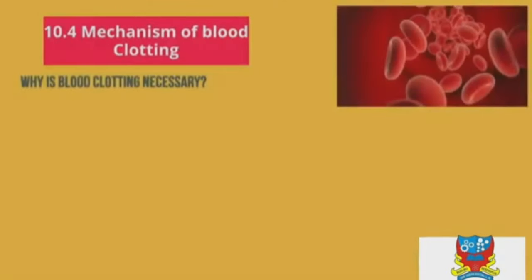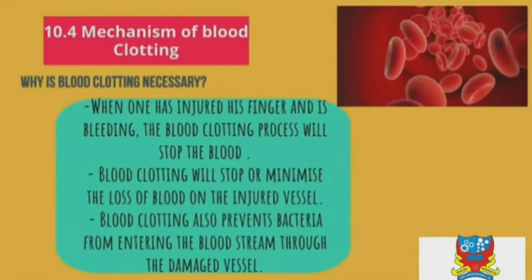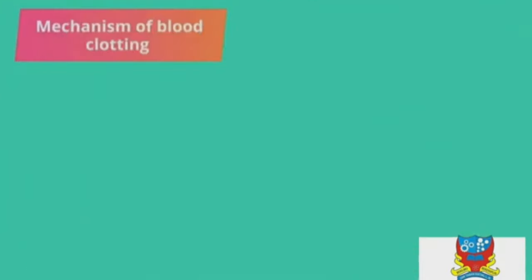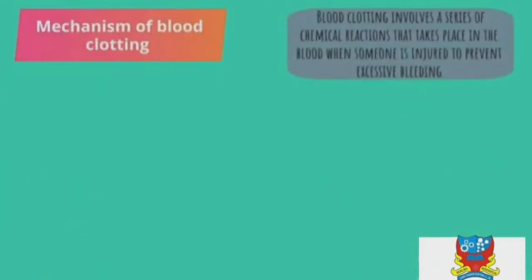Now let's look at the mechanism of blood clotting. Blood clotting is necessary to stop bleeding when injured, to minimize blood loss from a damaged vessel, and to prevent bacteria from entering the bloodstream through the damaged vessel. Blood clotting involves a series of chemical reactions that take place in the blood when someone is injured to prevent excessive bleeding.